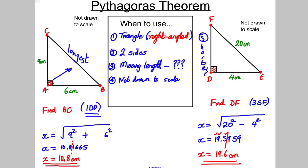So Pythagoras: right-angled triangles, you have two sides and want to work out the third. If you're finding the longest side, take the two sides, square them, add them, square root. If you're working out one of the shorter sides, take the two sides, square the bigger one first, subtract the smaller one squared, and square root that answer. Make sure you round appropriately.